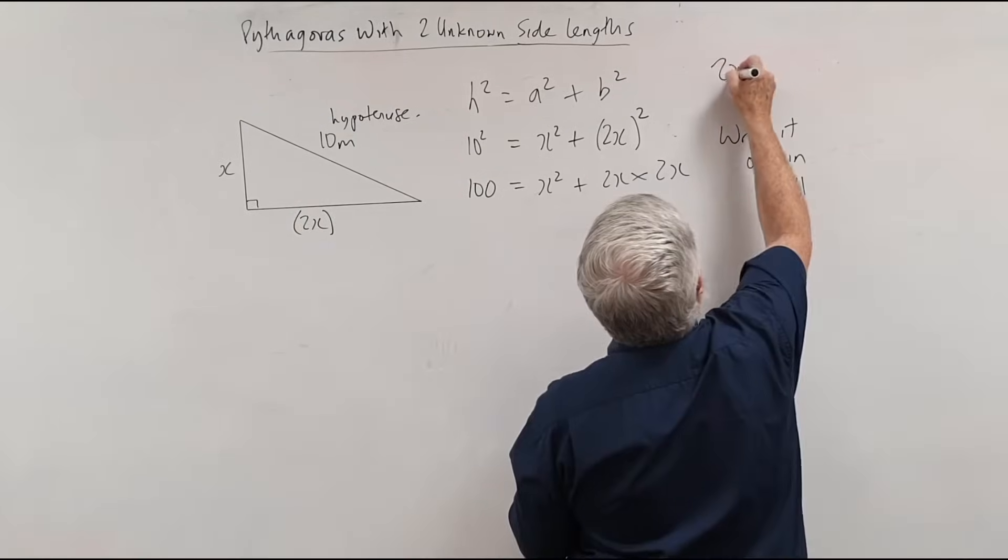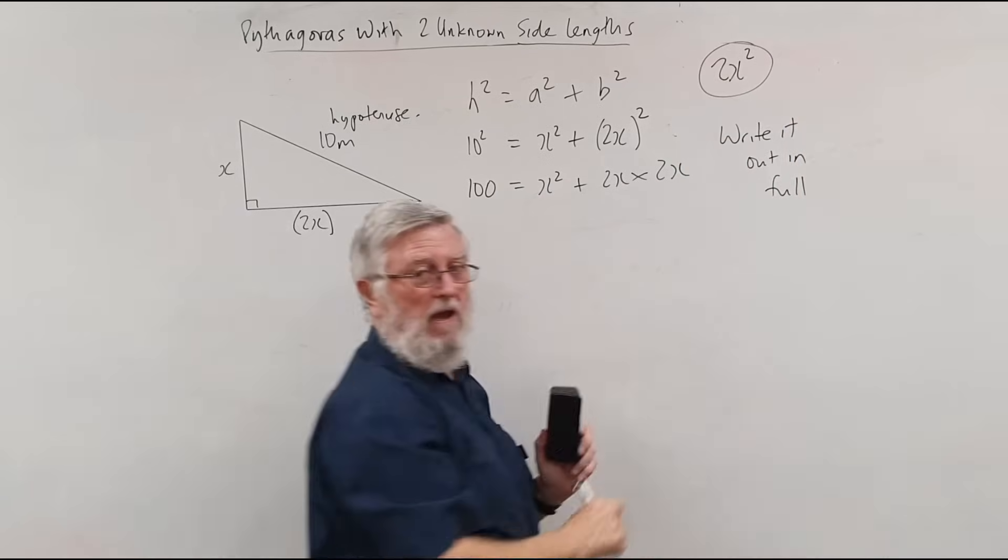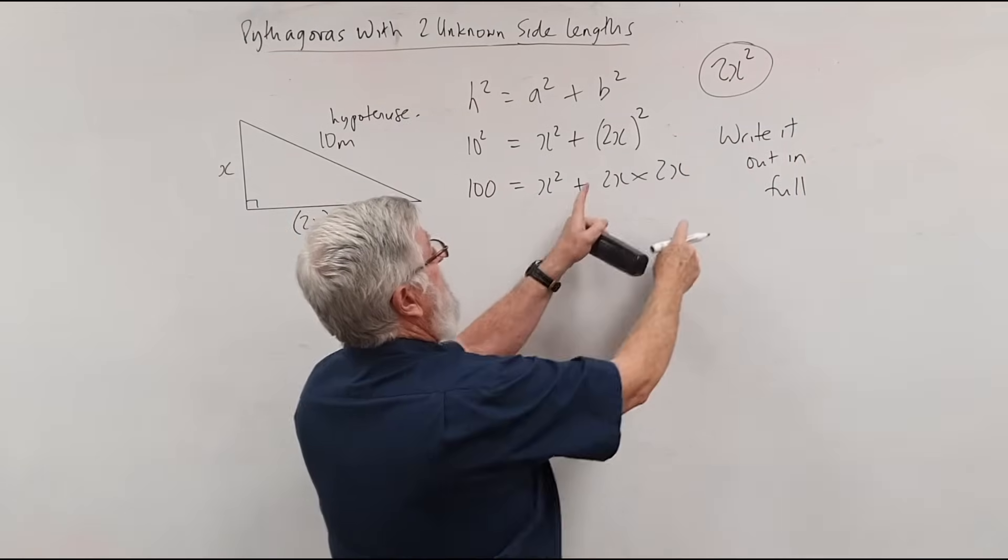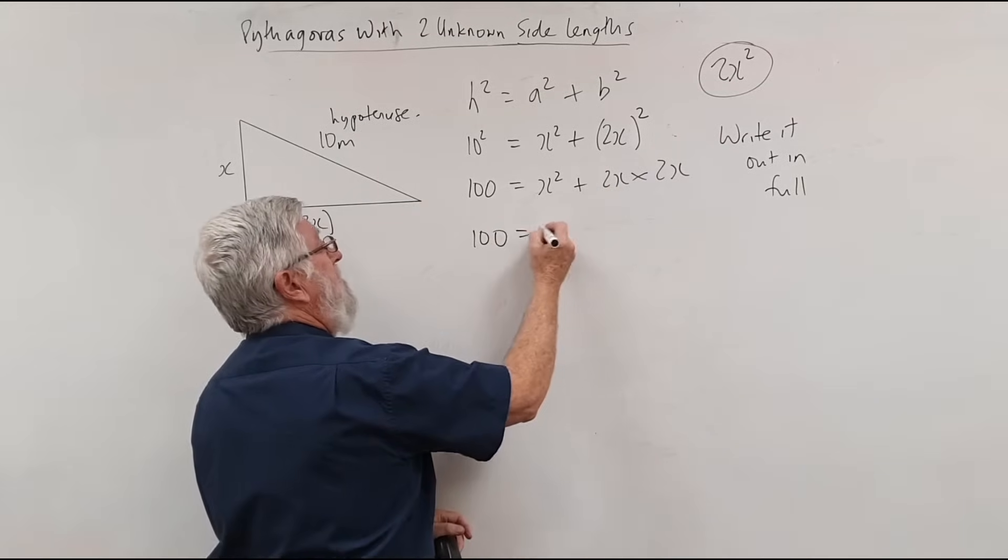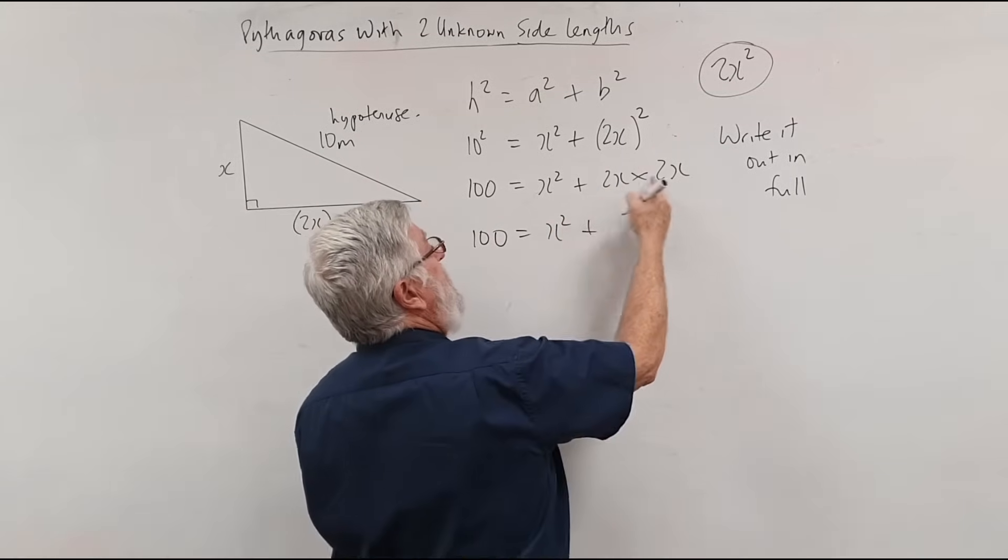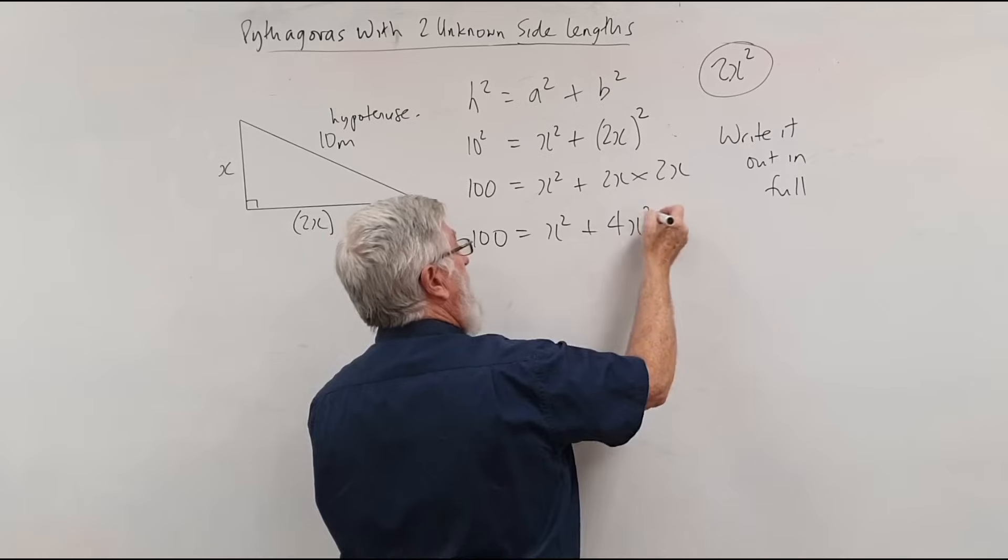So instead of going, I know what that is, a lot of students will go, well that's 2x squared and they're instantly incorrect. And the reason they're incorrect, this is 2 times the 2 will become a 4. So we're back to 100, we're back to x squared, and now we've got two 2's of 4 and we've got the x squared.